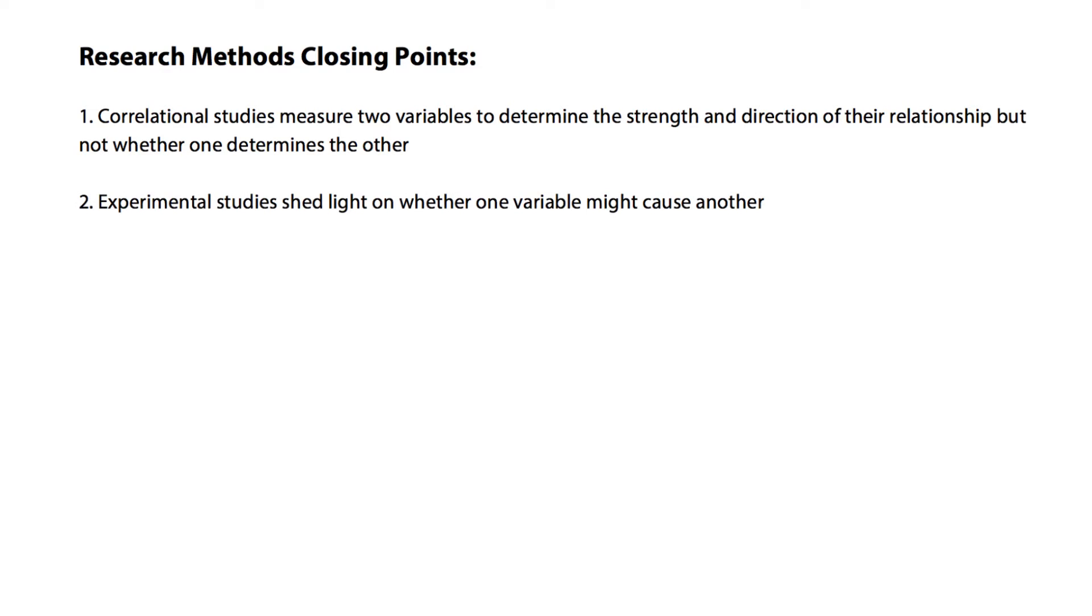In experimental studies, if done correctly, can shed light on whether one variable causes another. But true experiments have to have two conditions met. First, random assignment of participants to either a control or an experimental condition. And if these two conditions are treated exactly the same, except the experimental group gets the treatment, or the predicted cause, whereas the control group does not and serves as a baseline comparison.